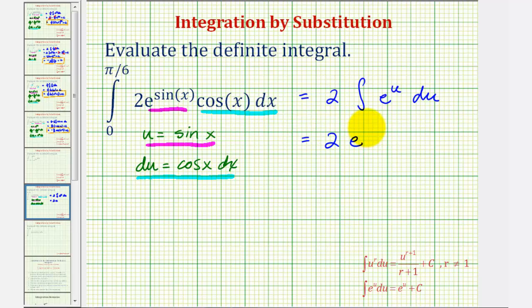Again, u is sine x, so we have two e to the power of sine x. Because we have a definite integral, we'll now evaluate this at pi over six and zero.